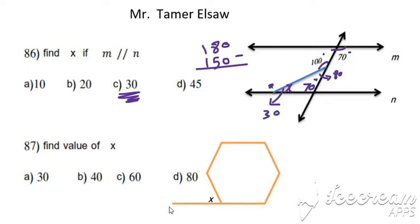If you want the exterior angles, it is 150. Okay, 70 plus 80, or 180 minus 30 is 150.